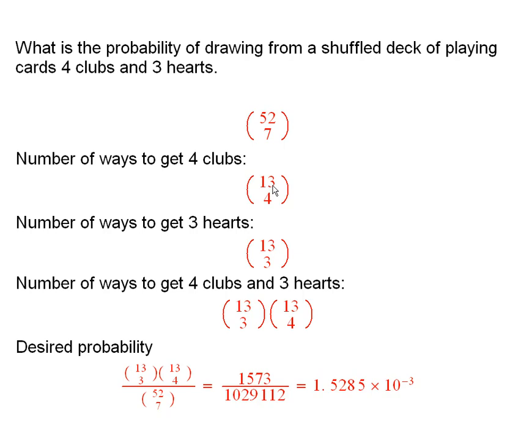There are 13 taken four at a time, or the number of ways of selecting four from 13. That's the number of ways to get four clubs because there's 13 clubs to choose from and you want the number of ways of picking four.